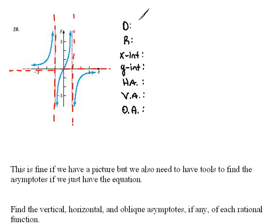So our domain would be the set of all x's such that x cannot equal a negative 1 and x cannot equal a positive 1. That's because those are vertical asymptotes. x equals negative 1 and x equals 1.